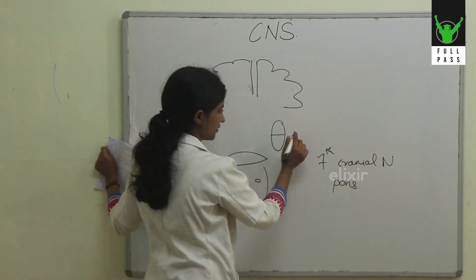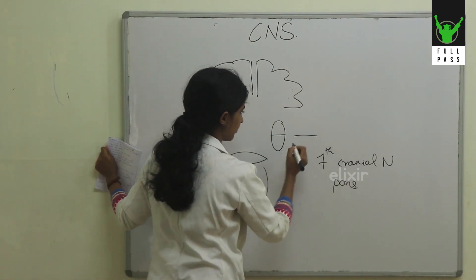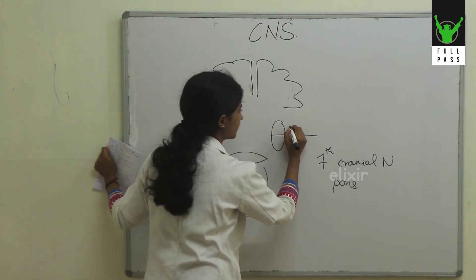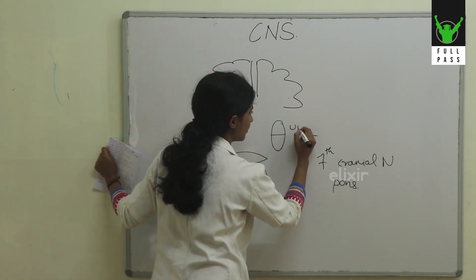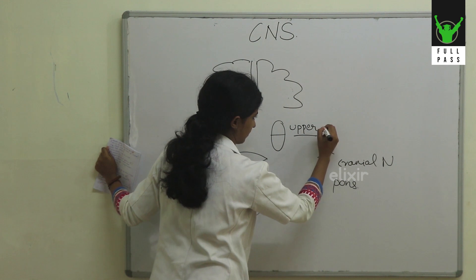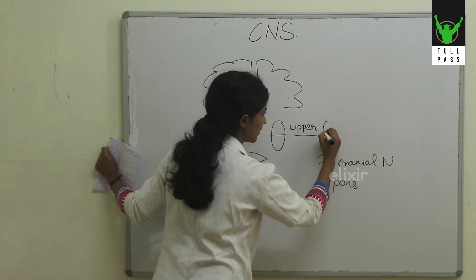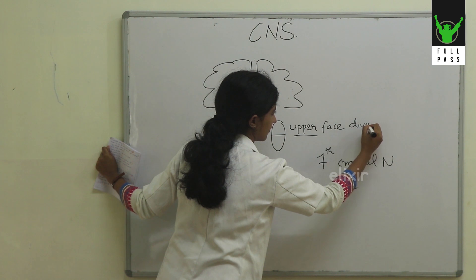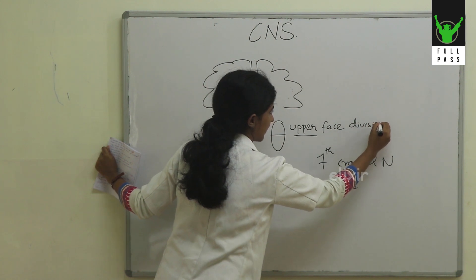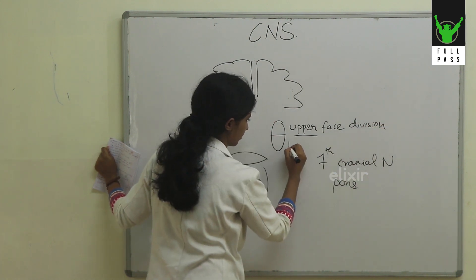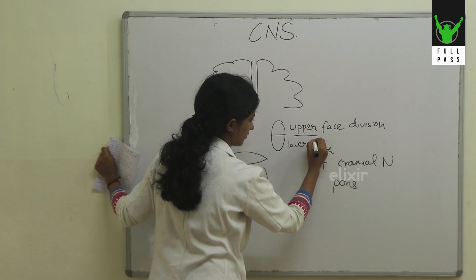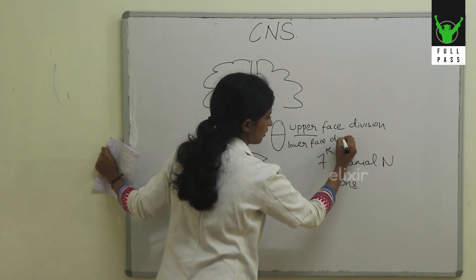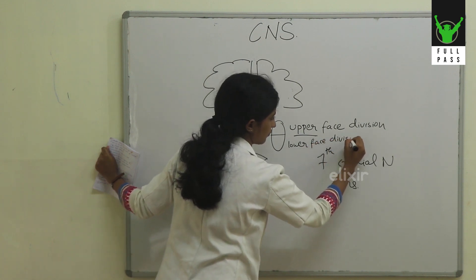Here is the pons, and this is the facial nerve nucleus. The nucleus has two divisions: the upper face division and the lower face division.